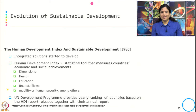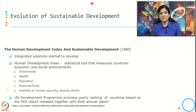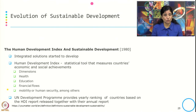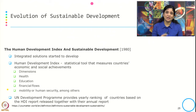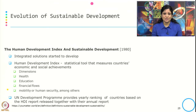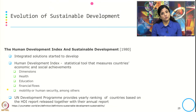Then in 1980, the Human Development Index (HDI) came into picture as an integrated solution to measure a country's economic and social achievement. It is a statistical tool that assesses achievement through dimensions such as health, education, financial flow, mobility, and human security, among others. The UN Development Programme provides a country ranking based on this HDI report every year.